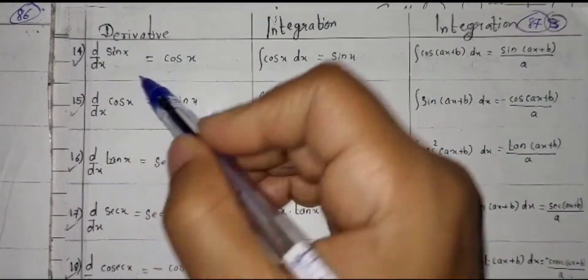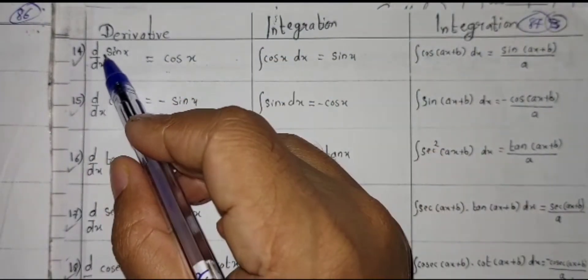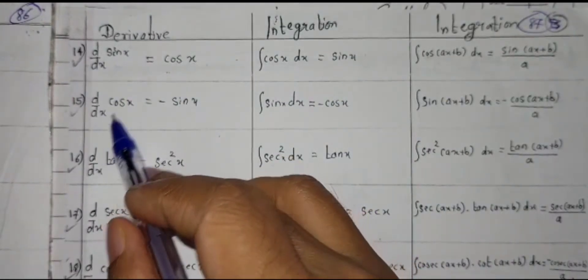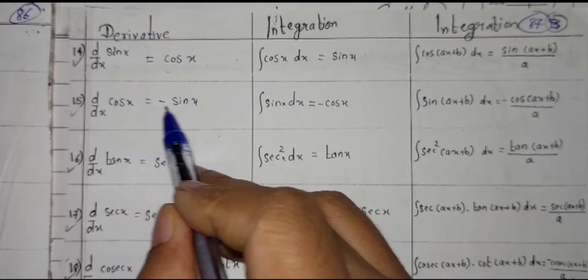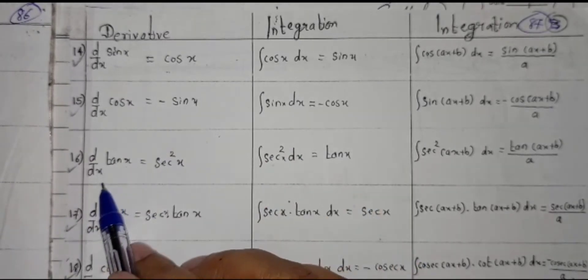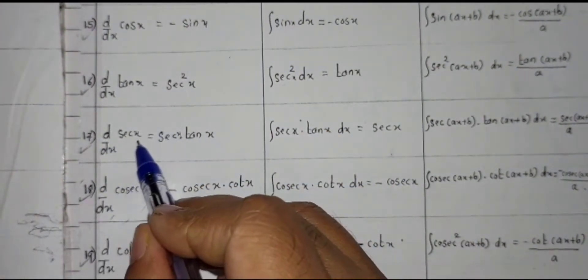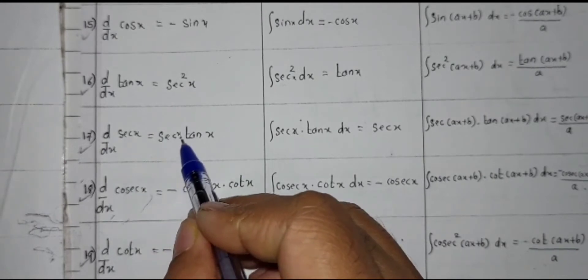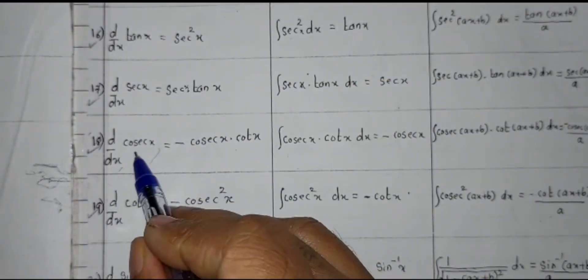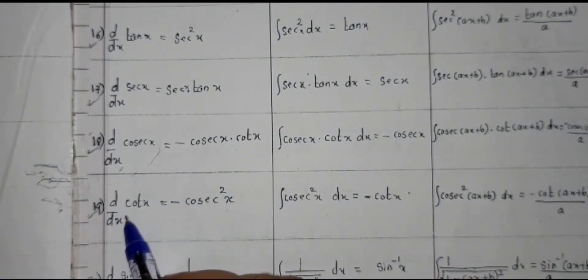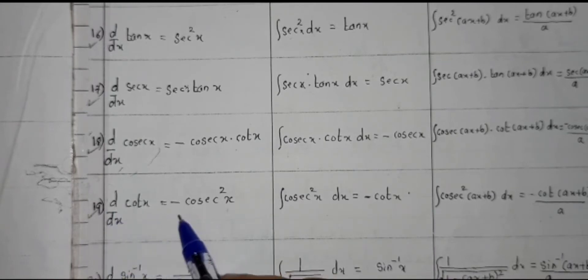Derivative of some trigonometric functions: d upon dx of sin x is equal to cos x. d upon dx of cos x is equal to minus sin x. d upon dx of tan x is equal to sec squared x. d upon dx of sec x is equal to sec x tan x. d upon dx of cosec x is equal to minus cosec x cot x. d upon dx of cot x is equal to minus cosec squared x.